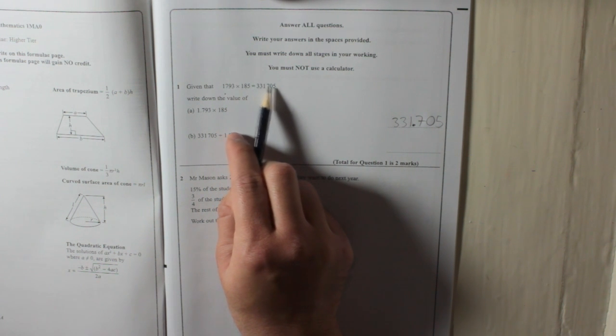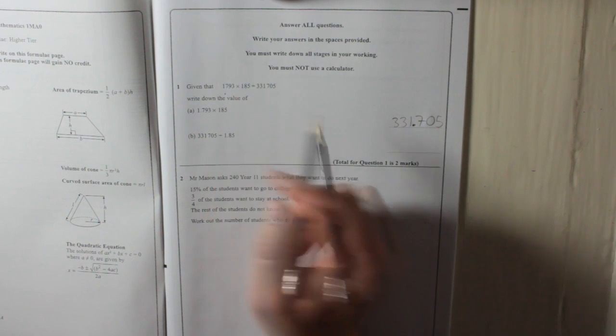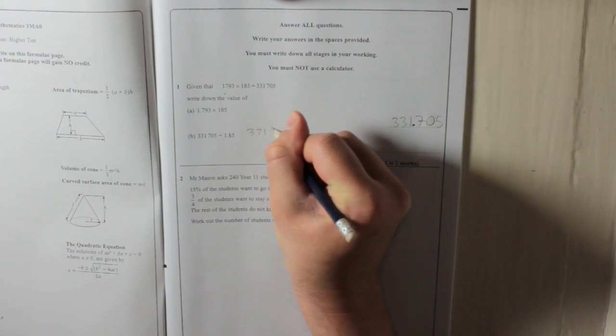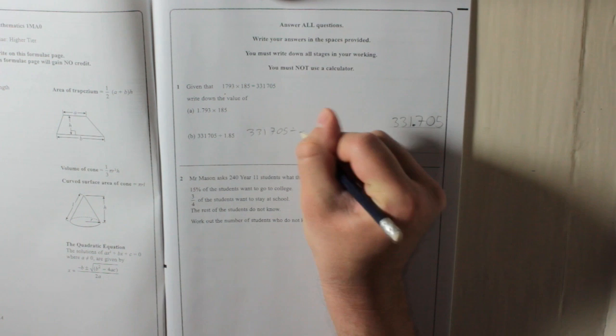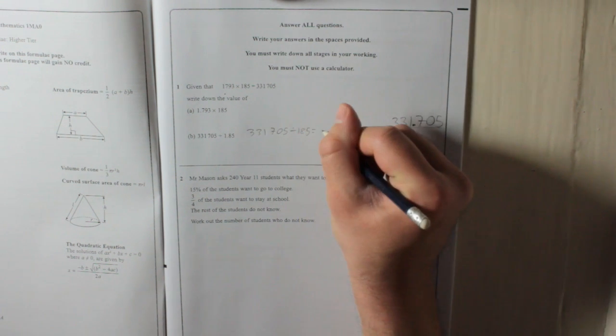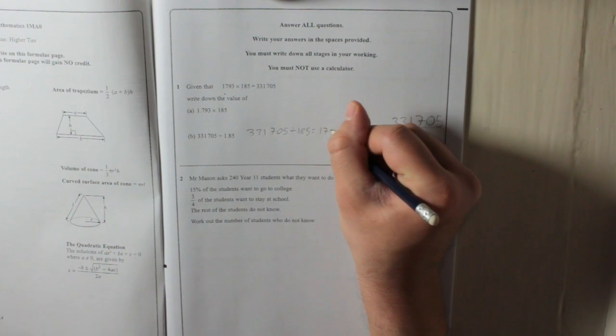And this, the big one at the end, divided by that will give you that. So, if I just write down, 331,705 divided by 1.85 gives 1,793.